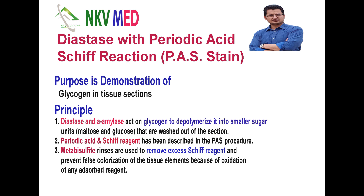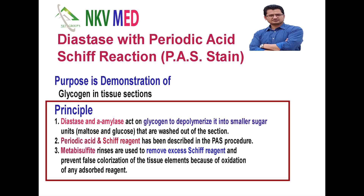So when we do PAS staining, which we have already discussed in the previous lecture, it will not stain the glycogen because the glycogen is not there. Now the question arises: if we use diastase, then why do we use the PAS? In this, we will use two sections. One section we will stain directly with PAS, and the other section we will stain with diastase plus PAS, and then we will compare both. If glycogen is present, the section stained with PAS only will stain the glycogen, but in the other section where diastase is added, the glycogen will not be stained.